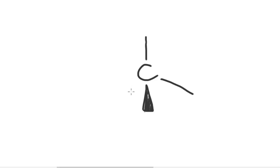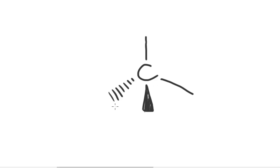The third kind of bond line is the broken or dashed line. We represent this with a triangle shape except it's broken — dashes — and this represents a bond which is pointing away from you, so going into the paper.